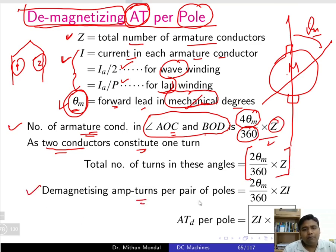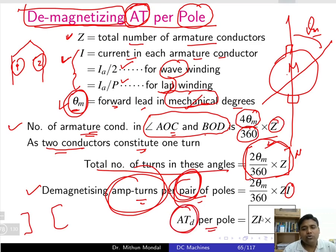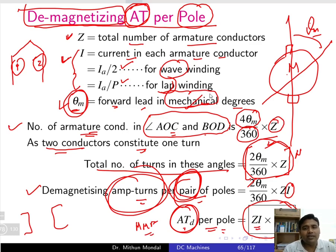The demagnetizing ampere-turns per pole expression is: ATD = (θM / 360) × Z × I, where θM is always in mechanical degrees. This gives the MMF produced for the demagnetizing effect under the influence of each pole. This is the demagnetizing ampere-turns per pole formula to remember.